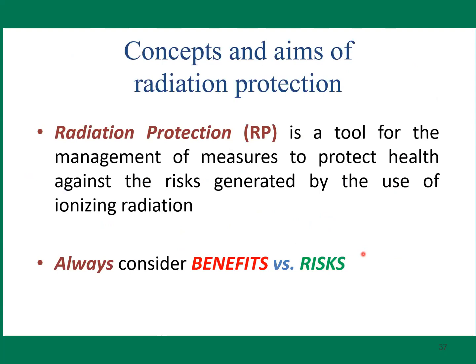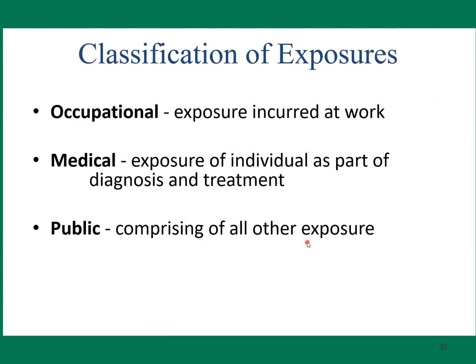Radiation protection: the concept and aim. Radiation protection is a set of measures to protect health against the risks generated by the use of ionizing radiation. Always consider benefit versus risk. Classification of exposure includes occupational, medical, and public.